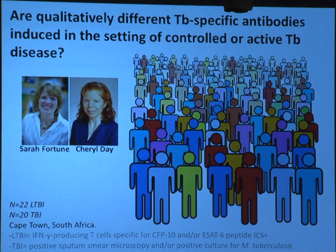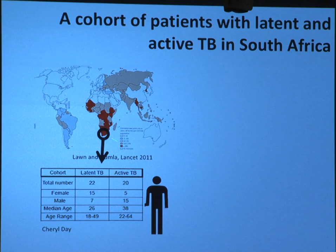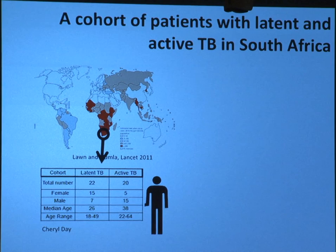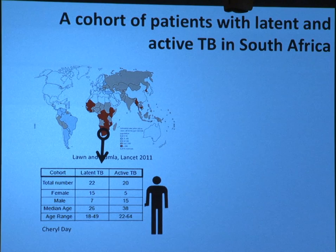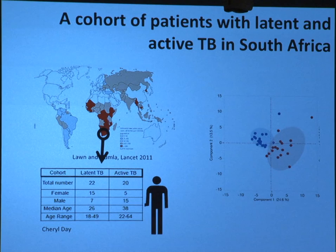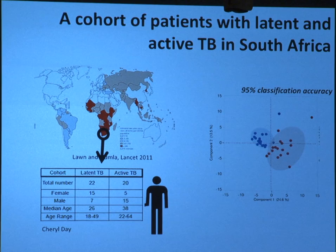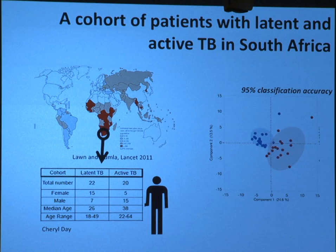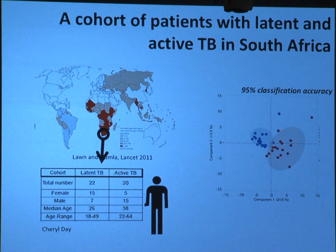Cheryl sent us 42 samples from Cape Town — 22 latently infected and 20 actively infected individuals. We were blinded when the samples arrived and re-blinded when they started getting profiled. After collecting 80 different data points on antibody profiles targeting TB-specific antigens, we found something remarkable: you could completely differentiate someone who was actively infected from someone who was latently infected just by looking at antibody FC profiles. There was 95% classification accuracy in this small cohort, and adding more individuals gave much more robust separation. In a clinical situation where we don't have a diagnostic test, just by measuring some features of antibodies — and we've distilled this down to just two features — we can separate actively and latently infected people in a point-of-care diagnostic that can be used anywhere in the world.